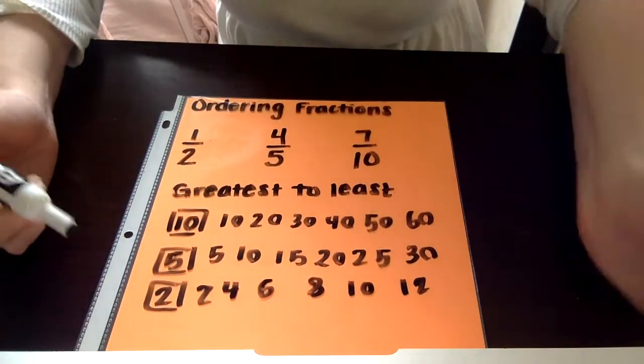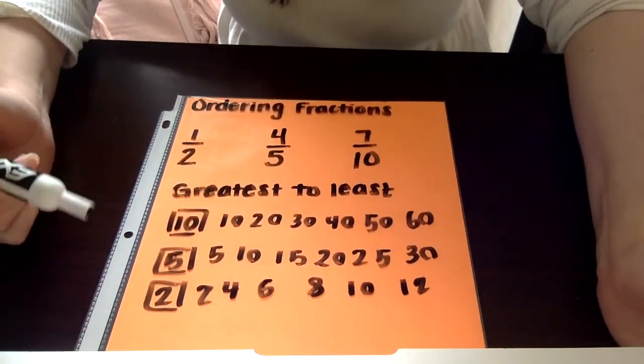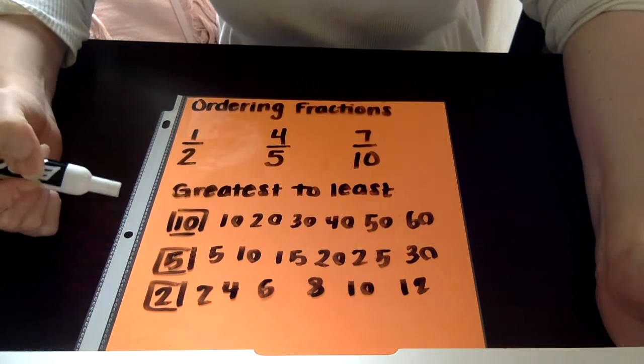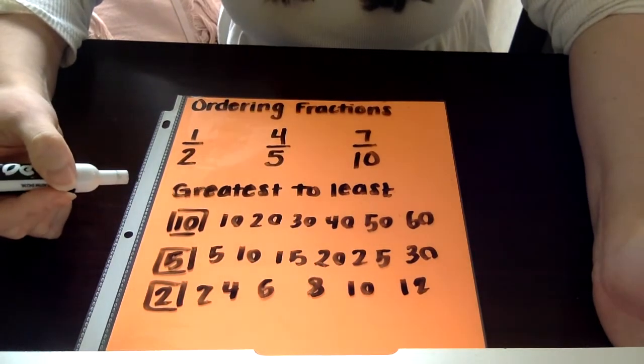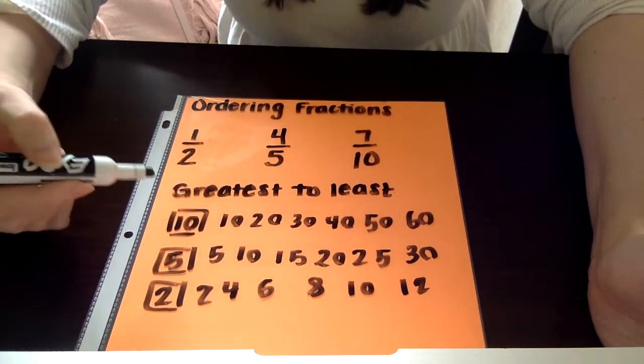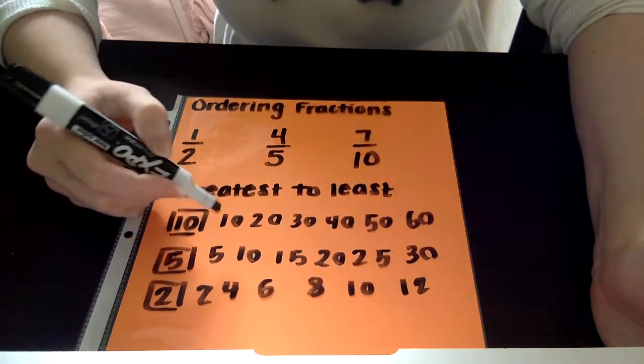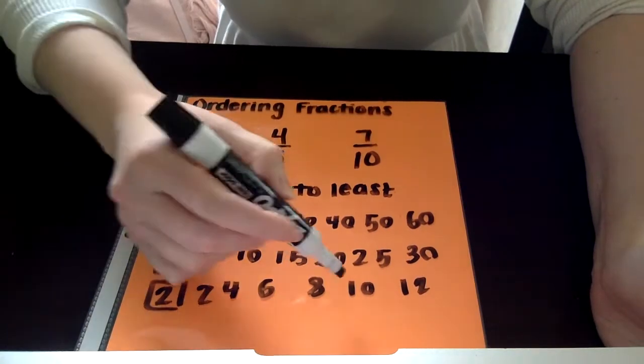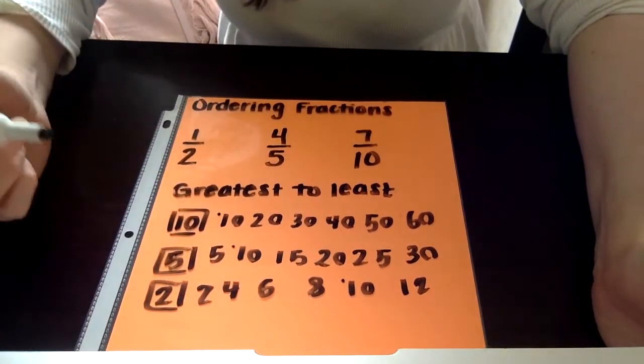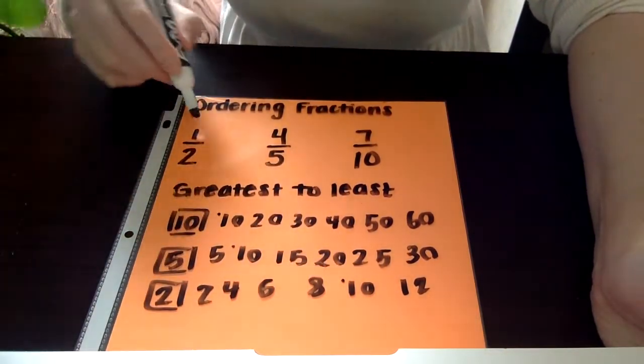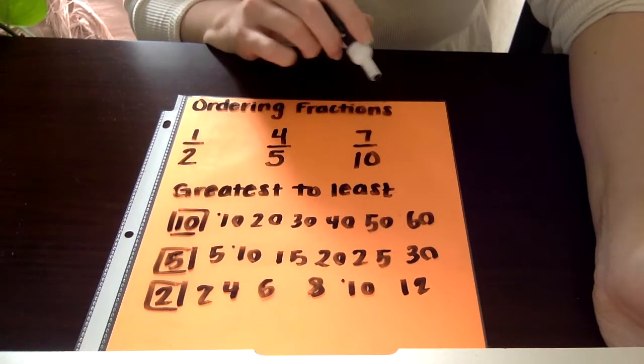So that's just my good general rule of thumb. I always want to find my first 6 multiples of each. And I'm looking for my least common multiple. That's the smallest multiple that all three of these denominators all have. And as I look, the smallest one that I can see that all three have is 10. So what that means is that I want all three of my fractions now to have a denominator of 10.